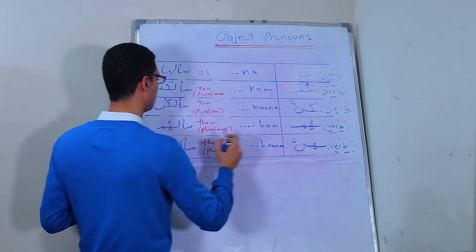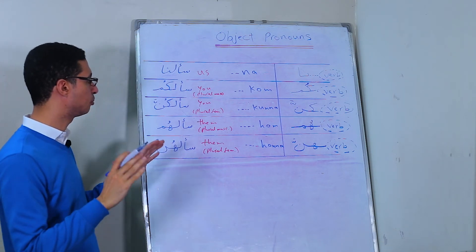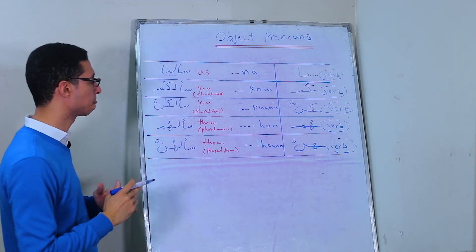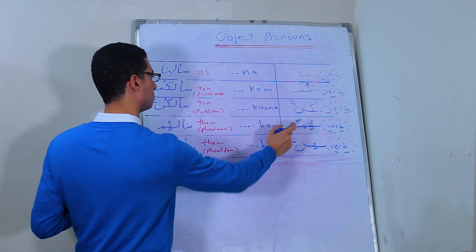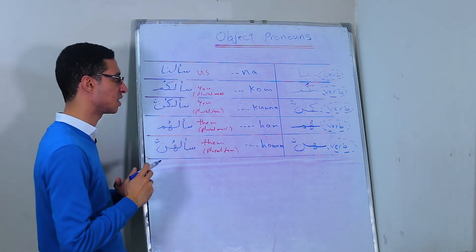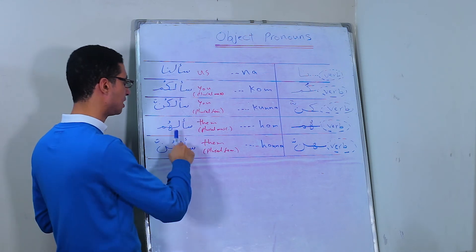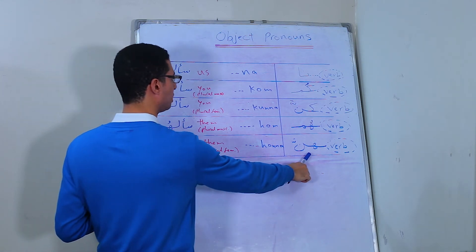سألهم. It's here, هم, which is plural masculine, a group containing at least one guy. So here, them. He asked them.